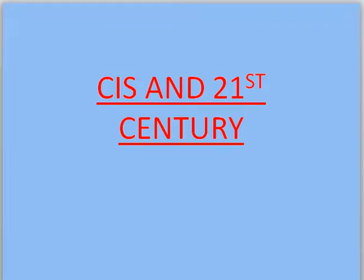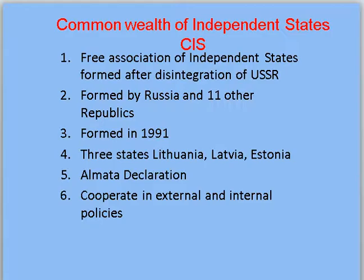Hello students, today I am going to explain you about CIS, that is Commonwealth of Independent States, and the 21st century. CIS stands for Commonwealth of Independent States. As you all know, the disintegration of USSR happened in 1991. CIS is a free association of independent states formed after the disintegration of USSR.